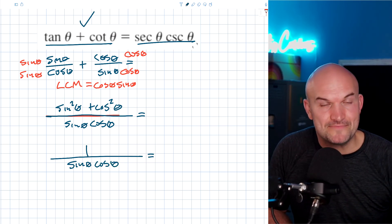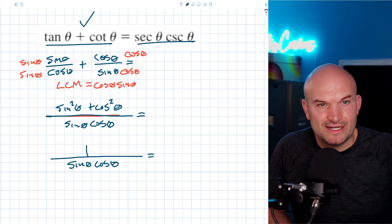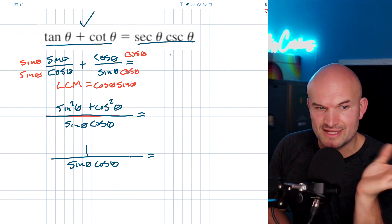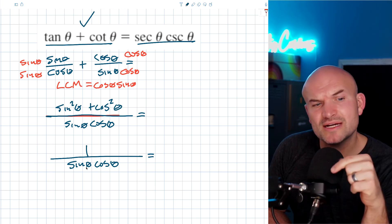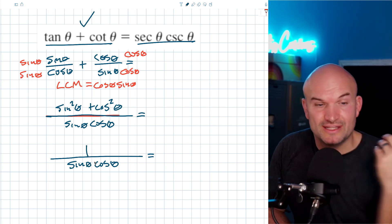I can rewrite that as a one and then I have sine of theta cosine of theta. Now, we still need this to look like the right-hand side. And the one thing I recognize here is this is just an expression with no denominators. Here we have a numerator and a denominator. And we also recognize that the sine of theta and cosine of theta are in the denominator.